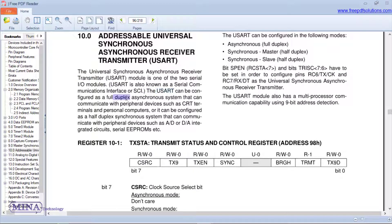USART can be configured as a full-duplex asynchronous system that can communicate with peripheral devices such as CRT terminals and personal computers. USART can be configured as a half-duplex synchronous system that can communicate with peripheral devices such as AD or DA integrated circuits.